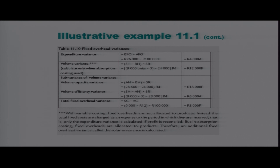The volume capacity formula is: actual hours minus budgeted hours, multiplied by the standard rate. Actual hours are 28,500; budgeted hours are 8,000 units multiplied by 3 hours, giving 24,000. Multiplied by R4, that gives R18,000. For volume efficiency: standard hours minus actual hours, multiplied by the standard rate. Standard hours are 9,000 multiplied by 3; actual hours are 28,500. Multiplied by R4, this gives a variance of R6,000, which is unfavorable because we used more hours than budgeted.